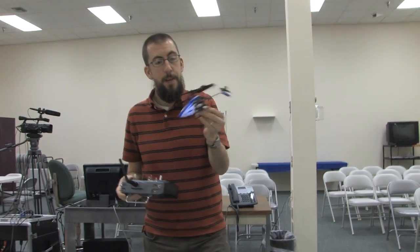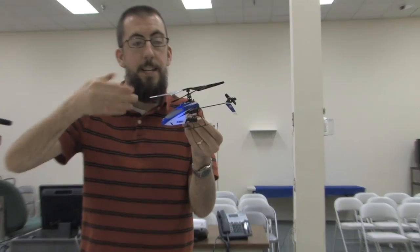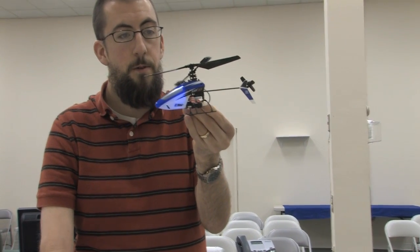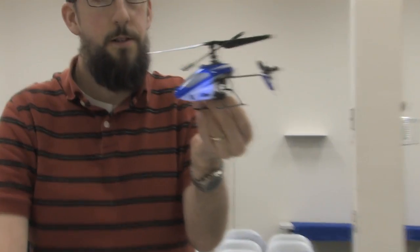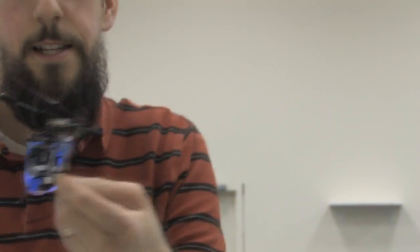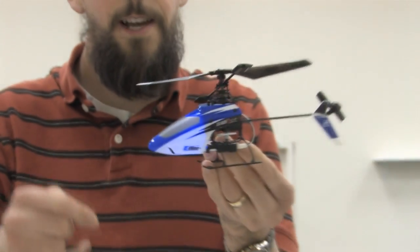So that's the fixed pitch helicopter, the blades independently can't change pitch. All right, so then we have the swash plate, which is your cyclic control, and then the tail rotor. So we have the throttle, we have the cyclic, and we have the tail.